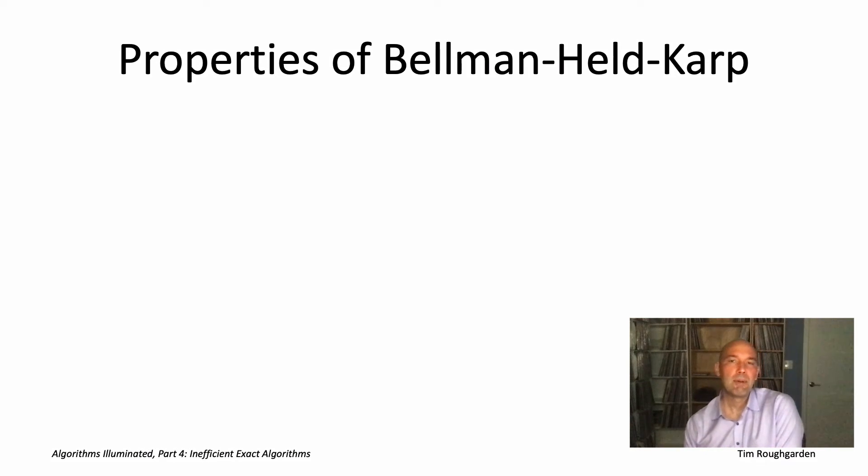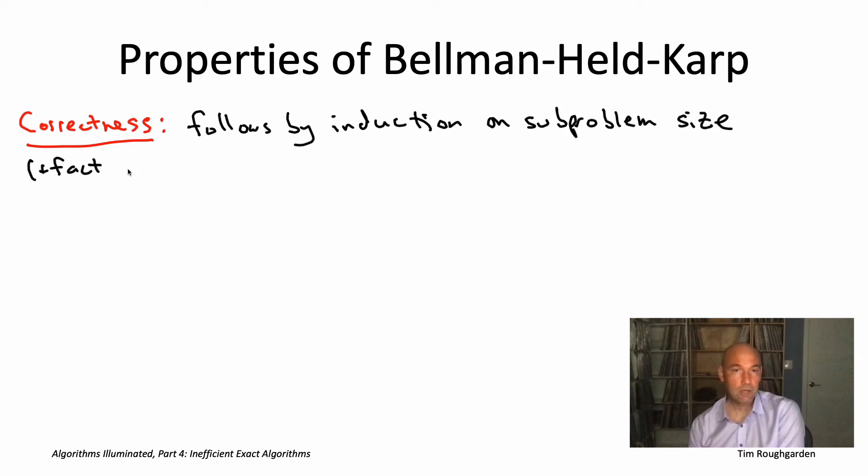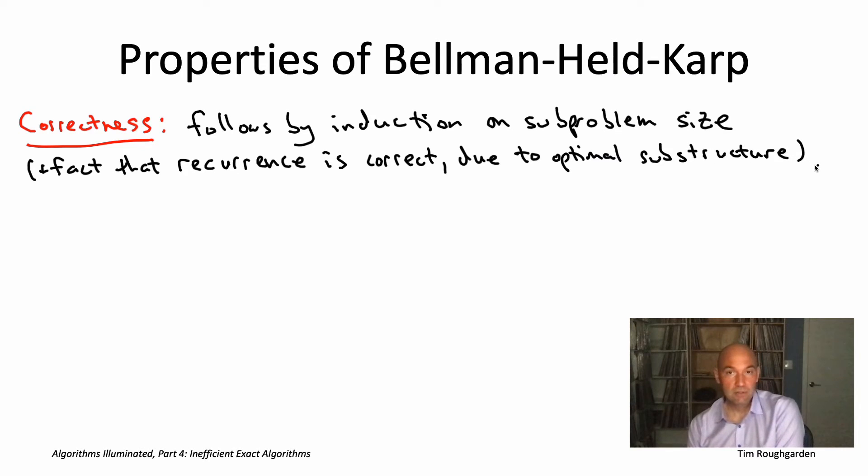So that's the Bellman-Held-Karp dynamic programming algorithm for the traveling salesman problem. As always, when we introduce an algorithm, we should think about what are its properties in terms of correctness and in terms of its running time. Correctness is not so interesting. It's kind of just the standard argument for dynamic programming algorithms, which you've seen many times. You proceed by induction on the subproblem side, so you just argue that each subproblem gets solved correctly. In the inductive step, why is it true? Well, the correctness comes from the correctness of the recurrence. We're filling in the subproblem answers correctly. Why is the recurrence correct? Well, that just goes back to the optimal substructure that we started with. We observed that optimal solutions to a given subproblem can only have one of a small number of possibilities, and the recurrence explicitly does exhaustive search over that small number of possibilities, so it necessarily computes the optimal solution.